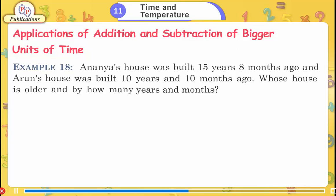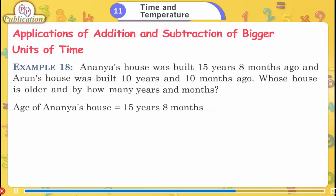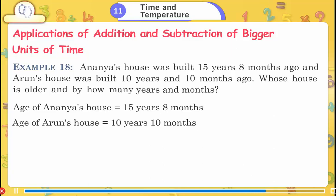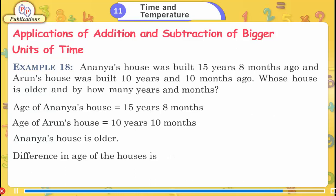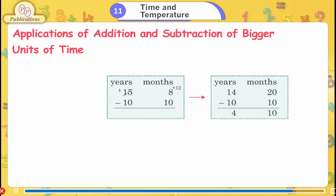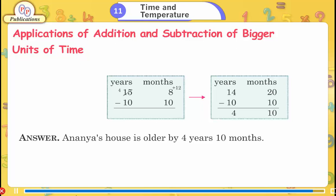Example 18: Ananya's house was built 15 years 8 months ago and Arun's house was built 10 years 10 months ago. Whose house is older and by how much? Ananya's house is older. Difference: 15y 8m − 10y 10m. Answer: Ananya's house is older by 4 years 10 months.